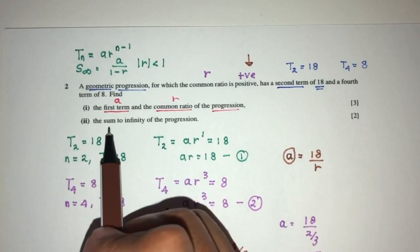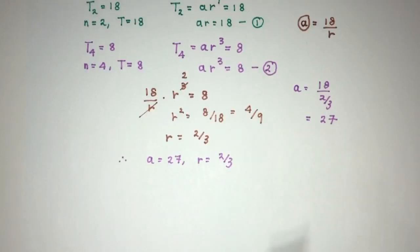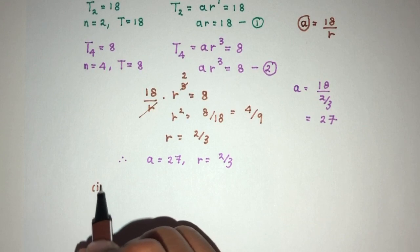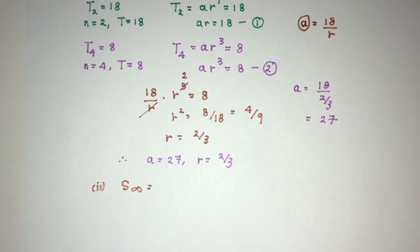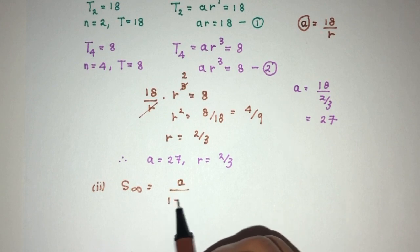Now, for part 2, we have to find the sum to infinity of the progression. Now, let's move on. So, part 2 of the question, sum to infinity is what? Okay, let's think. That will be simply given by the formula we have, which is a over 1 minus r.